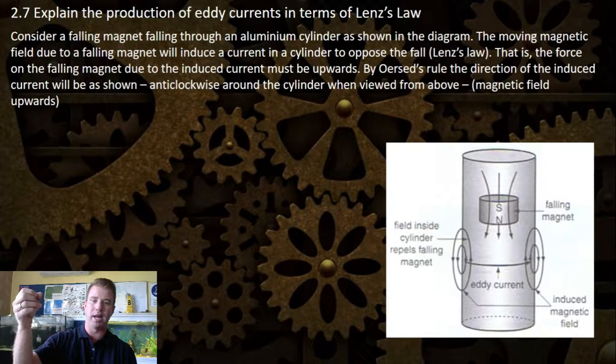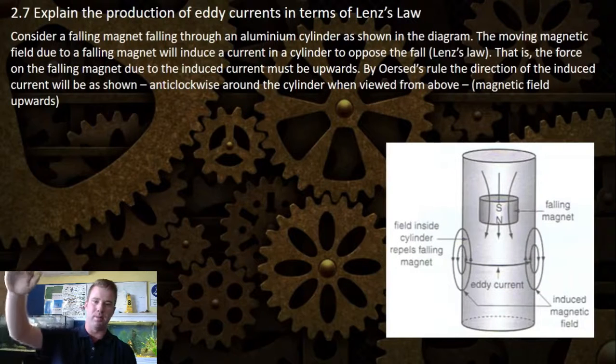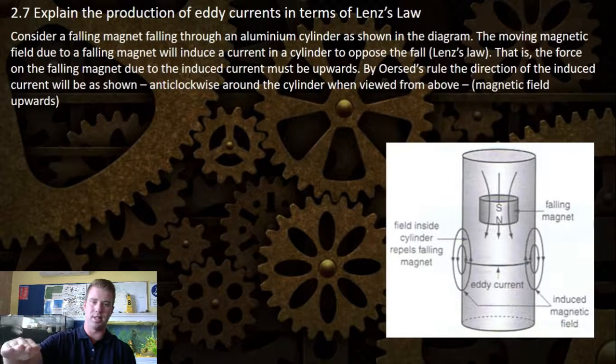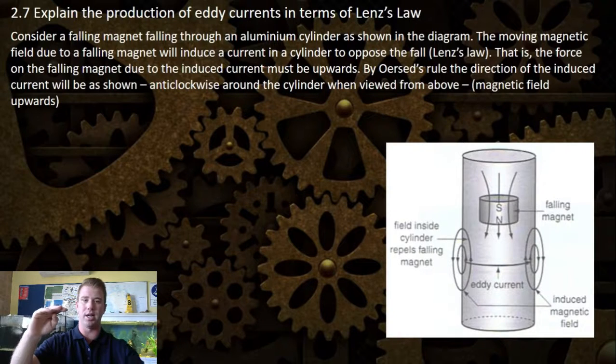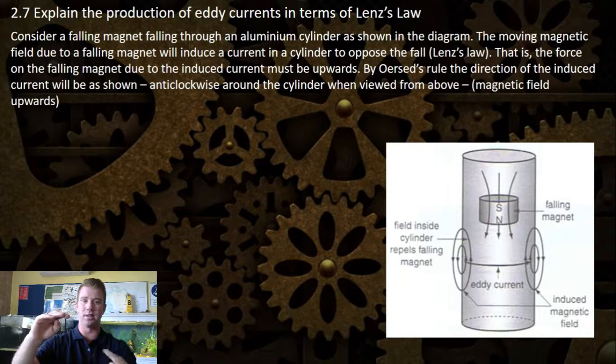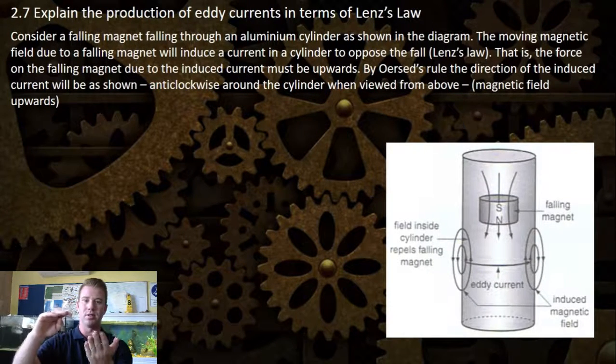If you dropped a magnet through a copper tube, you will notice the magnet slowly falls down due to Oersted's rule, which is the anti-clockwise induced current or the eddy currents opposing that fall, so it slows it down.